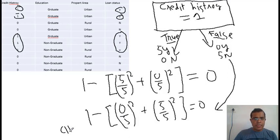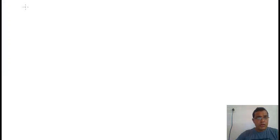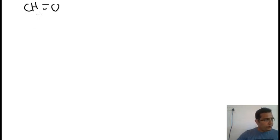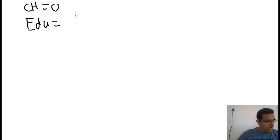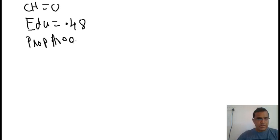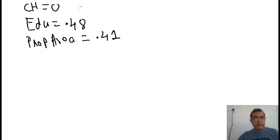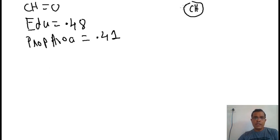Let's write down the Gini scores for all three variables. Gini score for education is 0.48; Gini score for property area is 0.41; Gini score for credit history is 0. If I am building a decision tree using these three variables, the root node should be credit history because its Gini score is the least. The second node should be property area and the third node should be education, since when the Gini score is low that is where node formation takes place first.